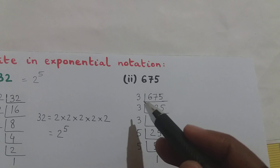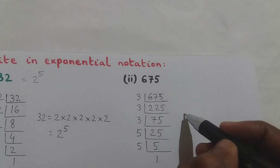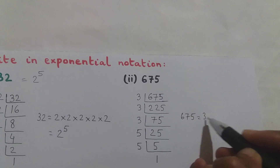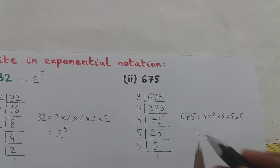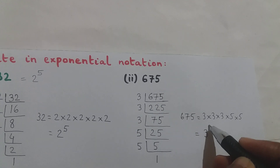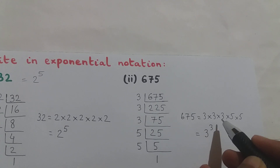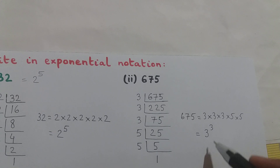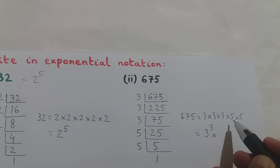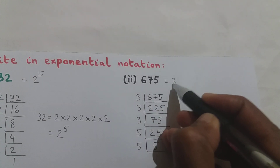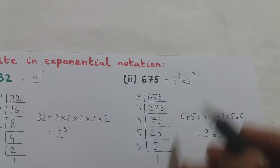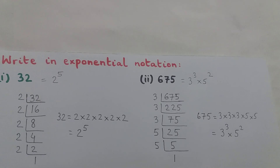So 675 = 3 × 3 × 3 × 5 × 5. I can write this as 3 × 3 × 3, which is 3 raised to the power of 3, multiplied by 5 × 5, which is 5 squared. So 675 = 3 cubed × 5 squared. And with that we have solved both questions of this question set.